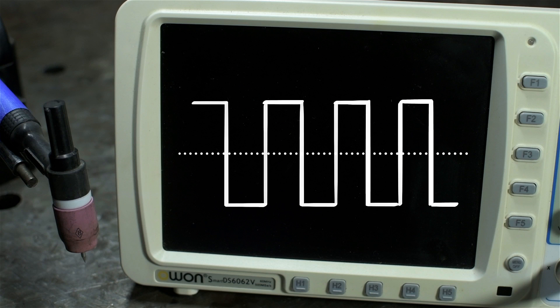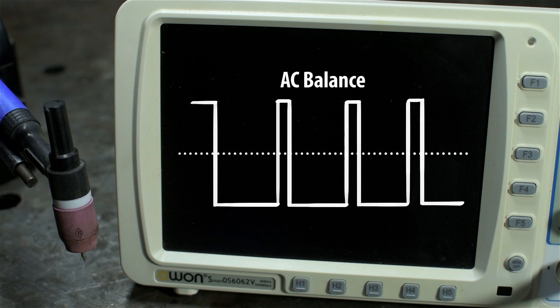In addition, you can usually change what's called the AC balance, or the amount of time the waveform spends in its positive half, versus its negative half. Sometimes you want more positive, sometimes you want more negative.